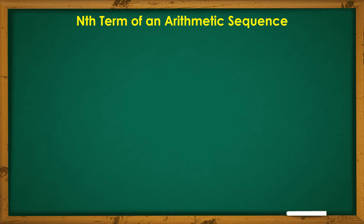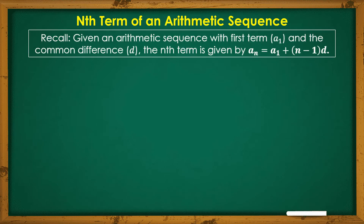To start this module, we will talk about the Nth Term of an Arithmetic Sequence. Let's recall first what we discussed in our previous module. Given an arithmetic sequence with the first term A sub 1 and the common difference D, the Nth Term is given by the equation: A sub N equals A sub 1 plus the quantity N minus 1 times D. Let's get to know more about this Nth Term and its functions in the Arithmetic Sequence.